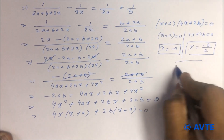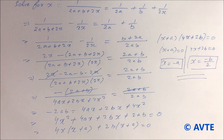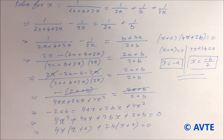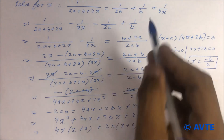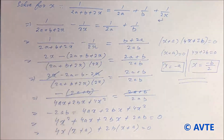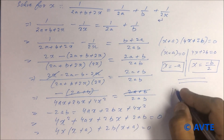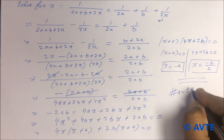I hope you understood this question. This is a beautiful question of quadratic equations: 1 upon 2a plus b plus 2x equals 1 upon 2a plus 1 upon b plus 1 upon 2x. To make this question easy, you just transform 1 by 2x to the other side. I hope you understood — keep watching our channel AVTE.